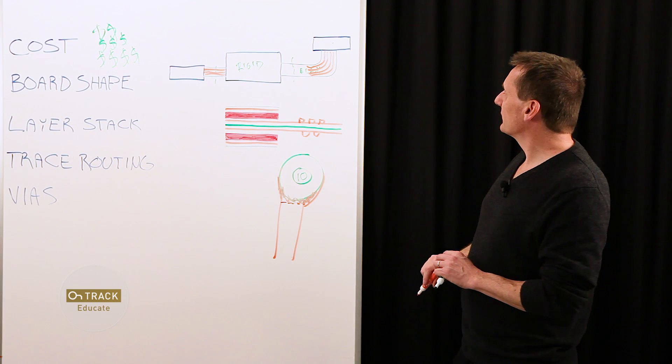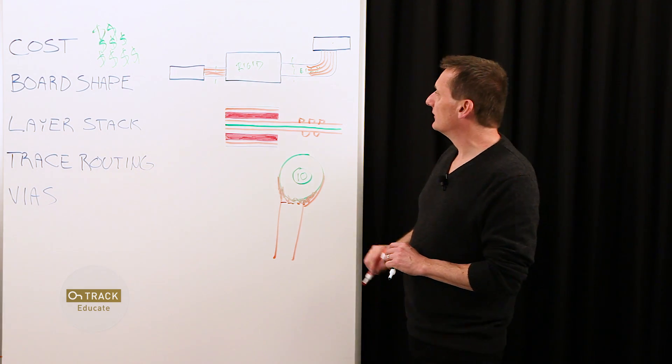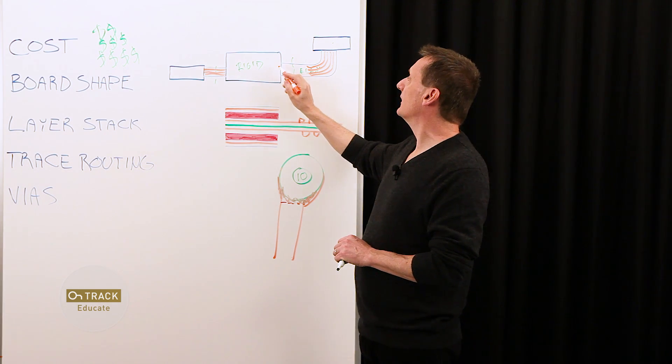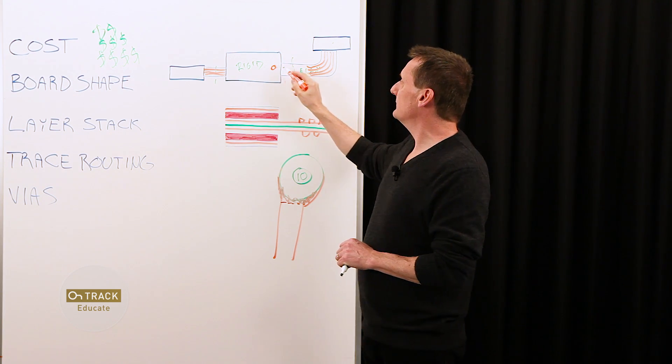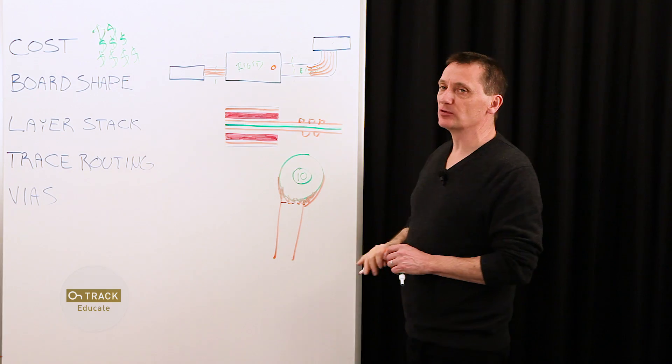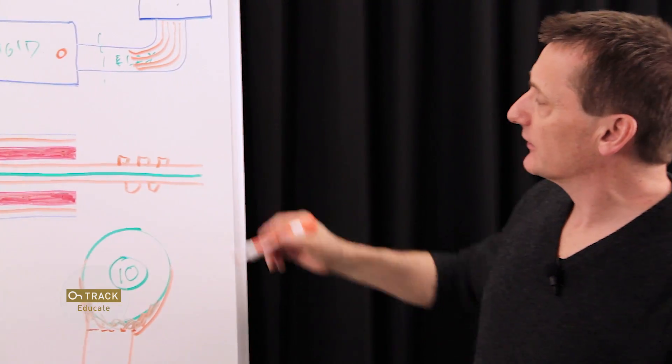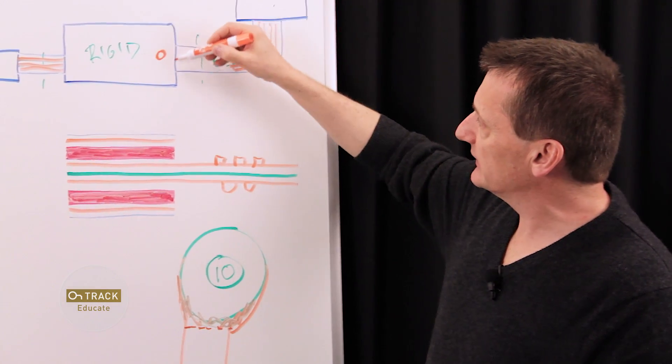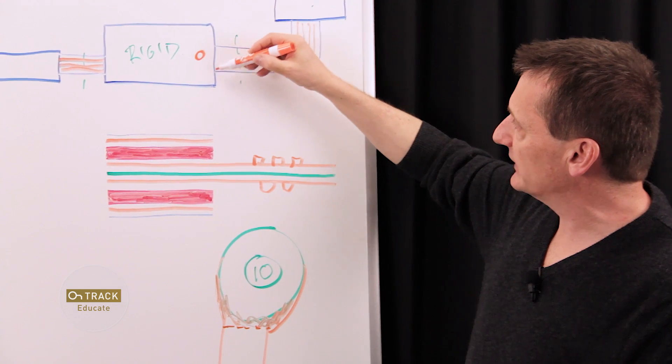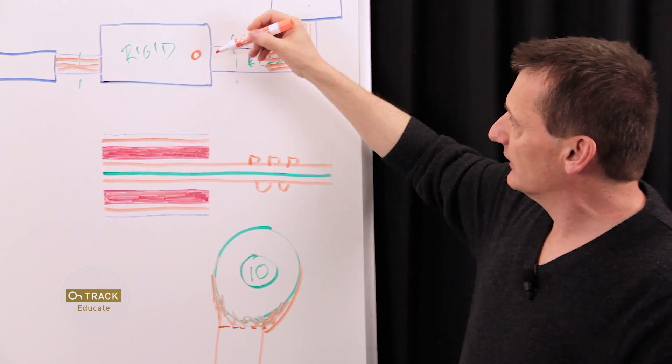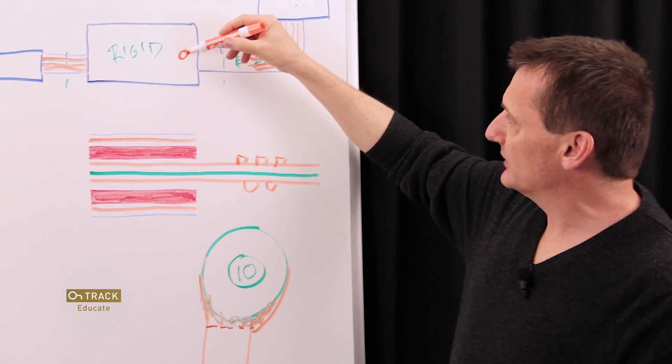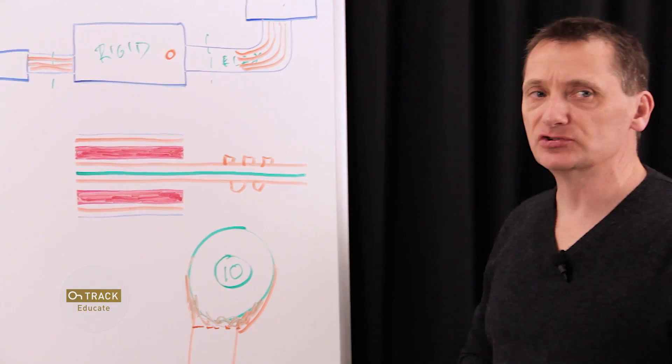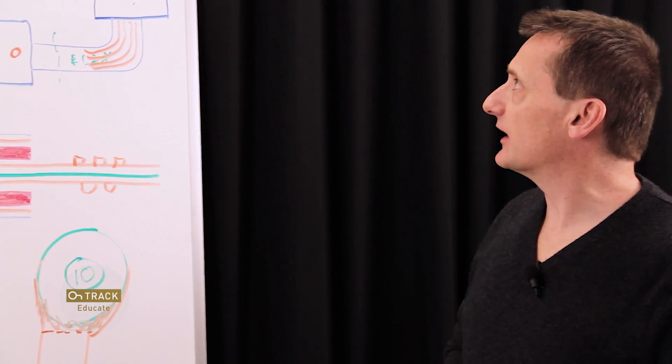Some other things to keep in mind would be when placing a via in the rigid section, keep it a minimum of 50 mils away from the boundary point of the flex. The reason is you can get instability in the materials right at that very edge where there's a transition. So for drilling purposes, keep things back a minimum of 50 mils to ensure good results in the rigid section.